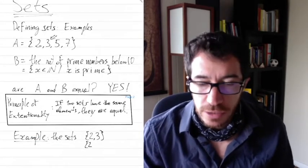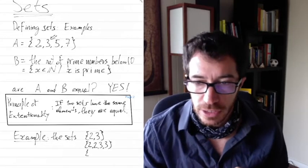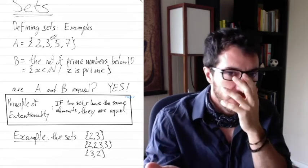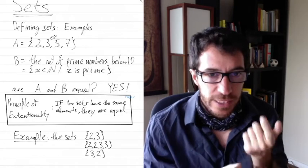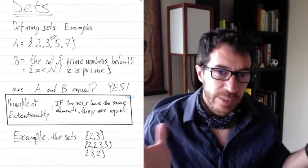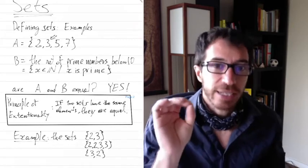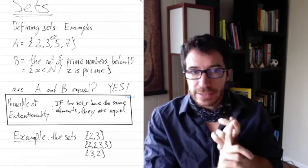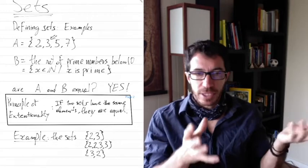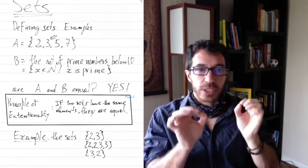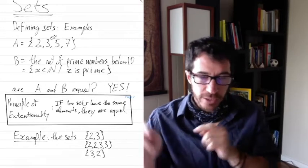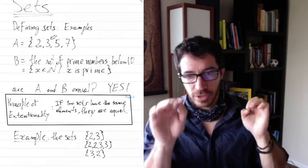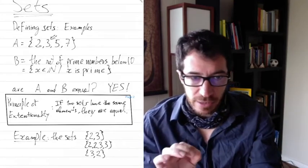For example, the sets {2,3}, {2,2,3}, and {3,2} - they are defined differently, but they all have the same elements: 2 and 3. So these three sets are actually completely equal. The order of the elements doesn't matter. How many times the elements show up doesn't matter - they're only there once. All that matters is which elements are inside, and in those three cases 2 and 3 are the only elements inside.